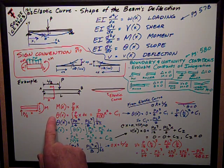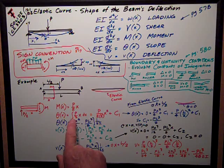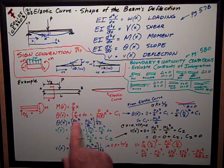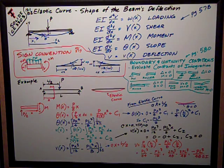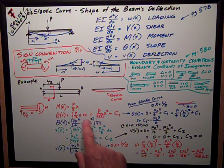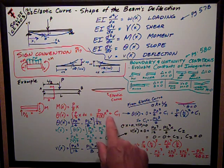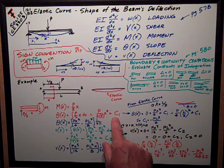So to get slope, I integrate that function once. So slope as a function of X is equal to the integral of P over 2 times X, dX. Evaluating that comes out to be P over 4 times X squared plus this constant C1.